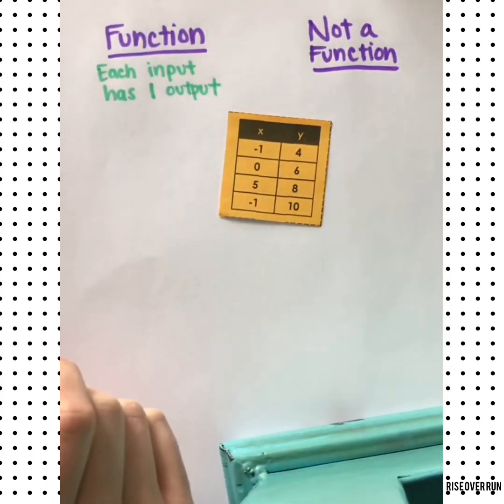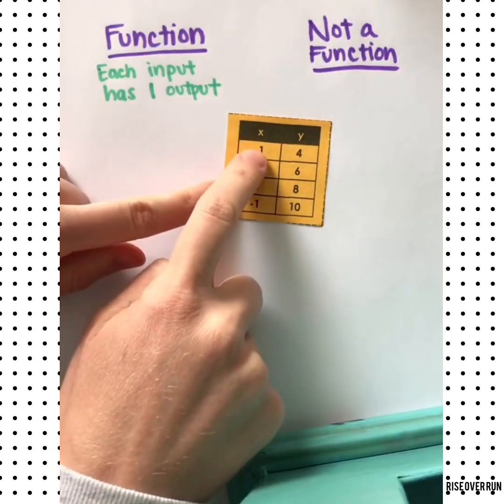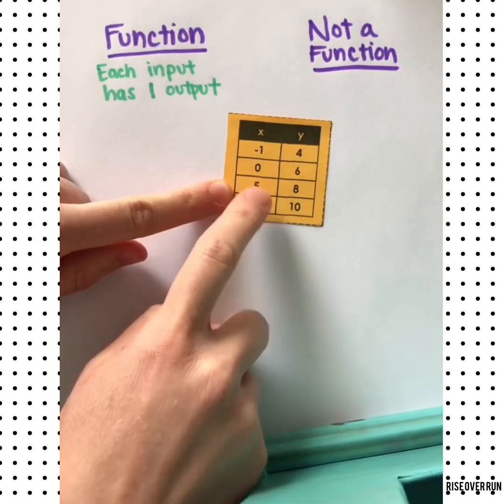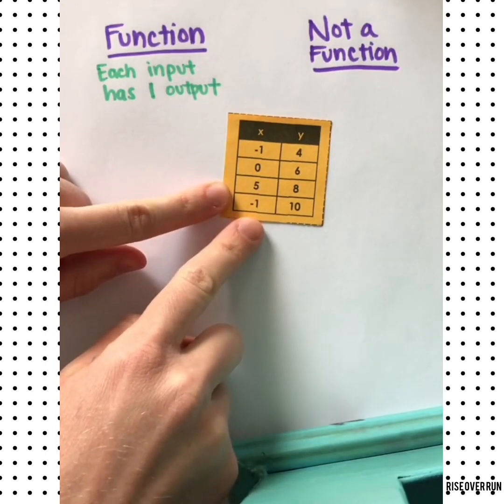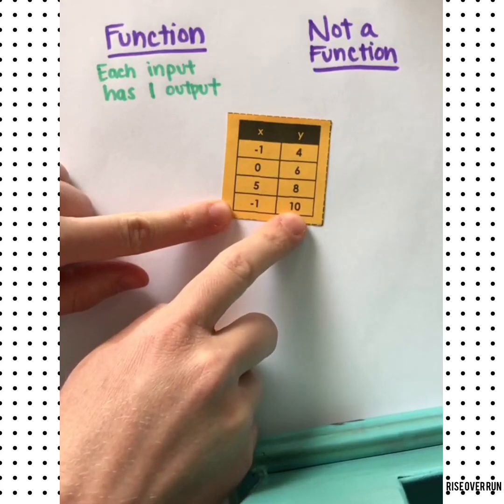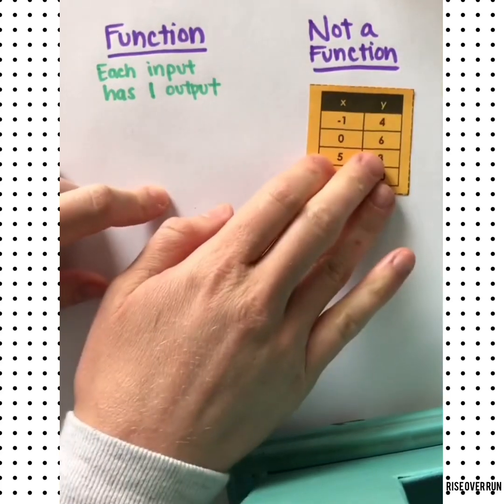So let's look at this table of values. Each input needs one output. Uh-oh. This input of negative 1 has two different outputs. That means that's not a function.